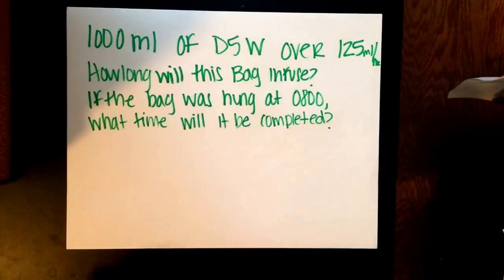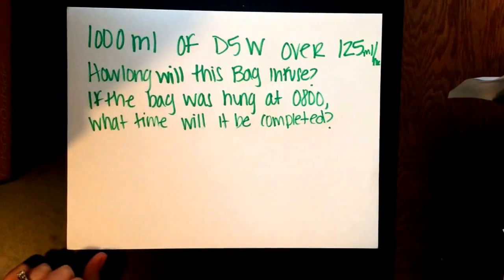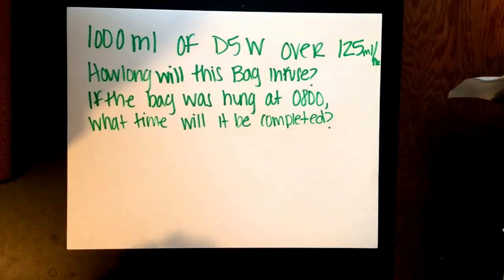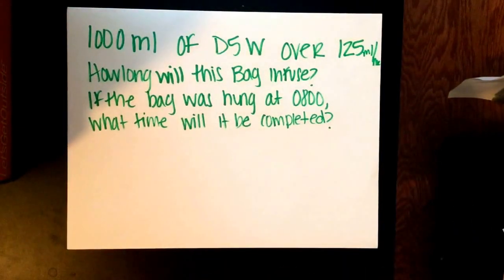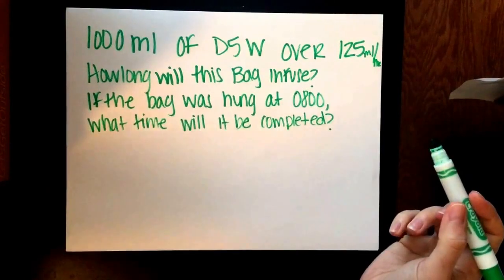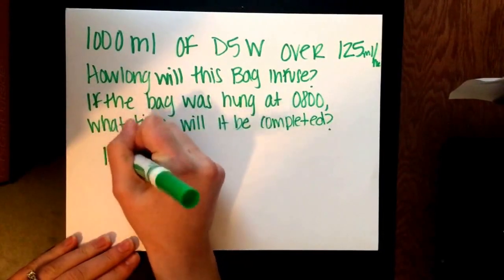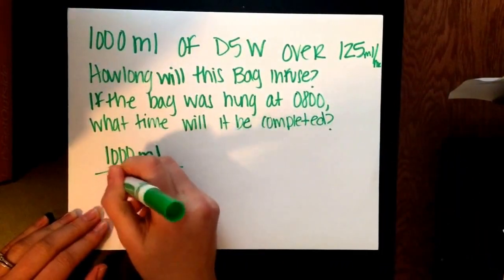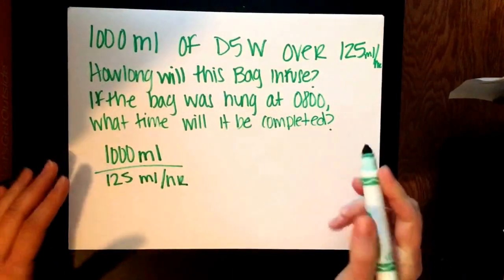Now let's look at calculating infusion times. Let's say you get an order that says 1,000 milliliters of D5W over 125 milliliters per hour. How long will this bag infuse? If the bag was hung at 8 o'clock in the morning, what time will it be completed? This is kind of a reversal of the previous problems. We have 1,000 milliliters and we have our rate of 125 milliliters per hour.